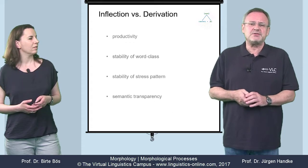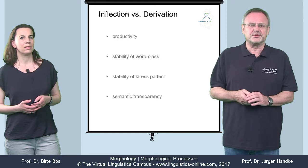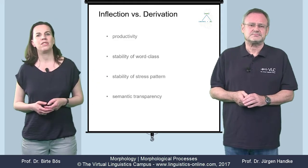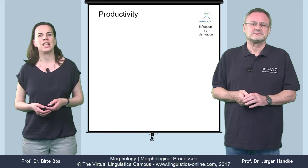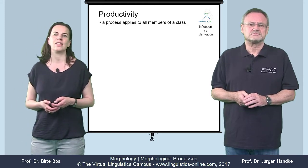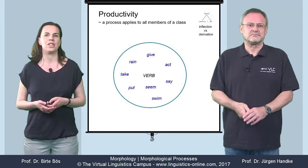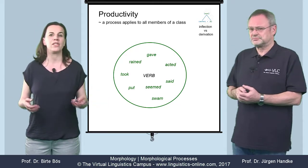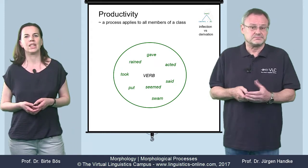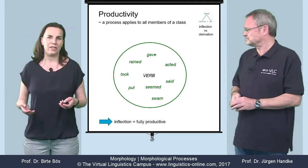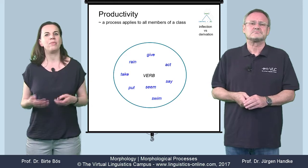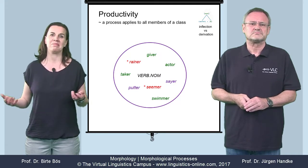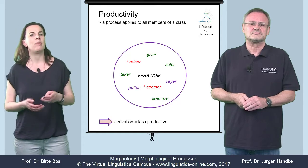In order to keep inflection and derivation apart, a set of criteria have been put forward. The first and maybe most important criterion is referred to as productivity. It defines the morphological process as fully productive if it applies to all members of a given class. Take the formation of the past tense, a typical inflectional process — all verbs have a past tense form, irrespective of the type of morphological operation involved: prefixing, suffixing, vowel change, and so on. So inflection is fully productive. Derivation, by contrast, is less productive. Take the formation of nouns from verbs: act/actor, swim/swimmer, but not rain/rainer or seem/seemer. So derivational processes do not apply to all members of a particular class.